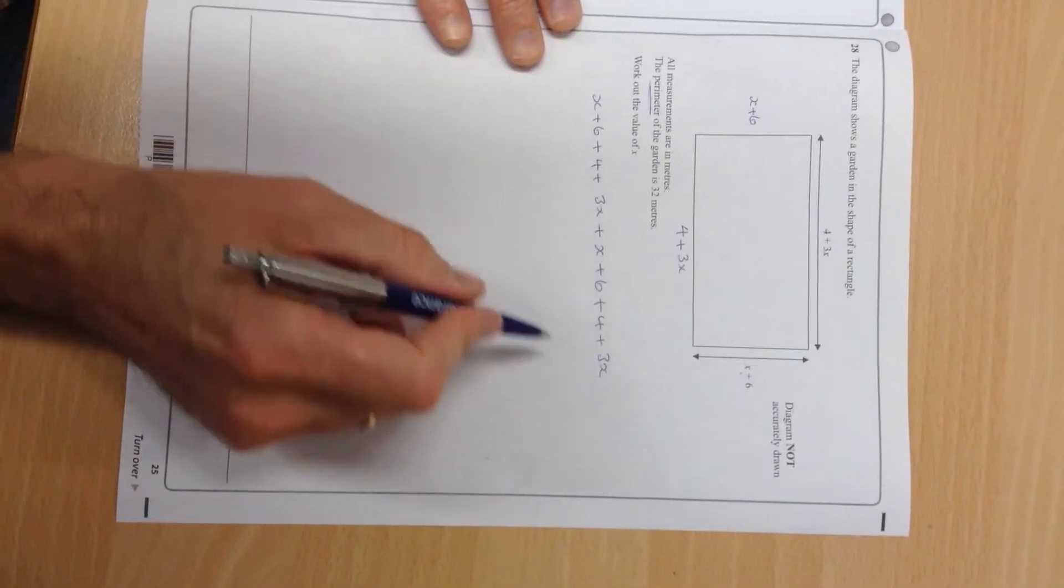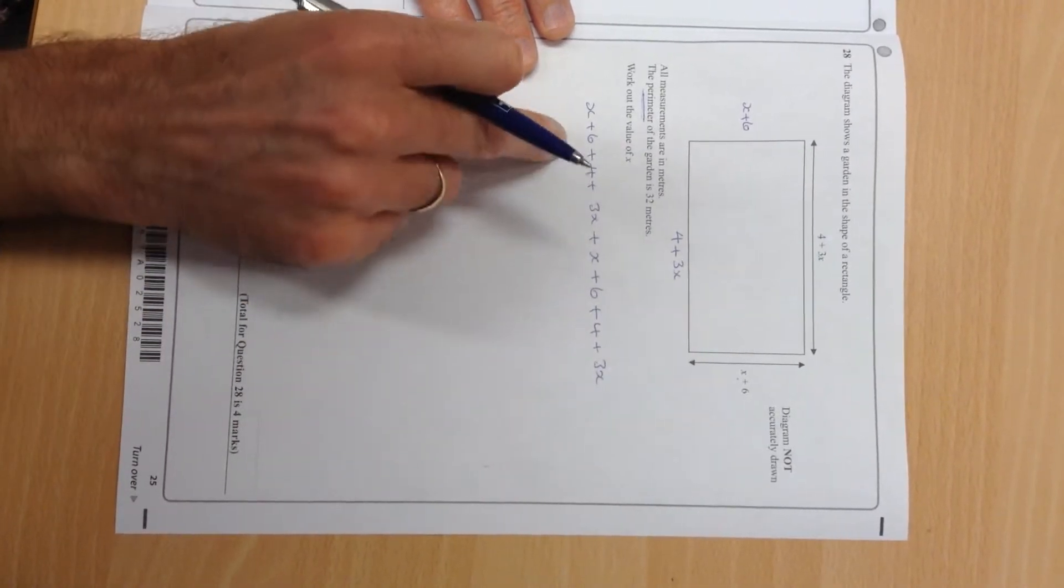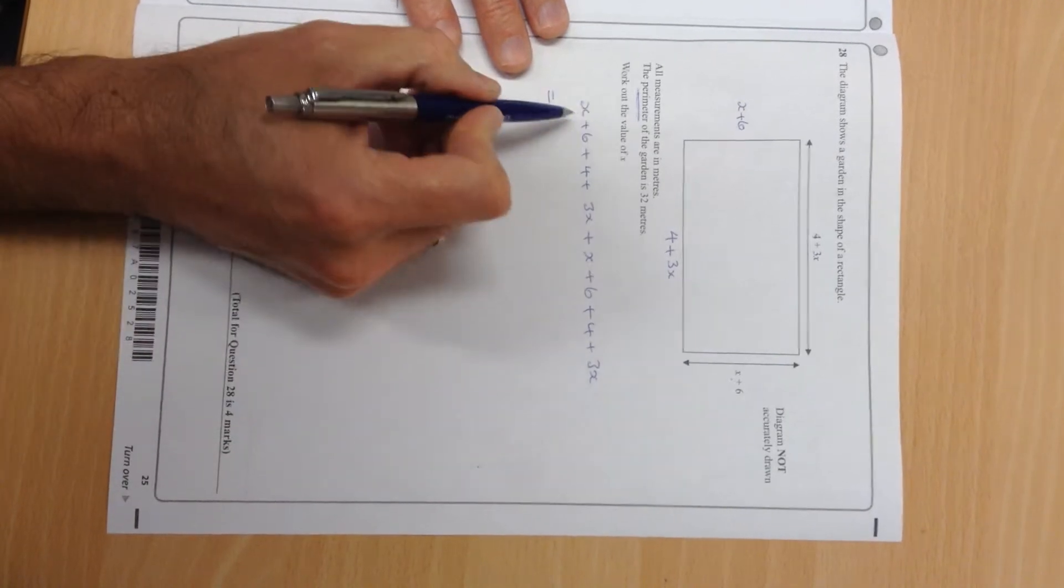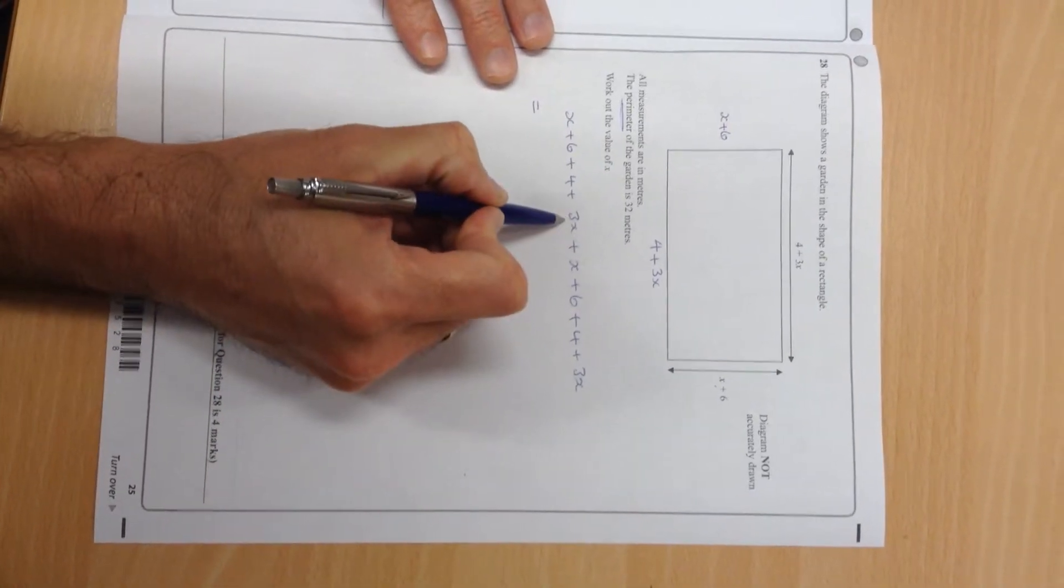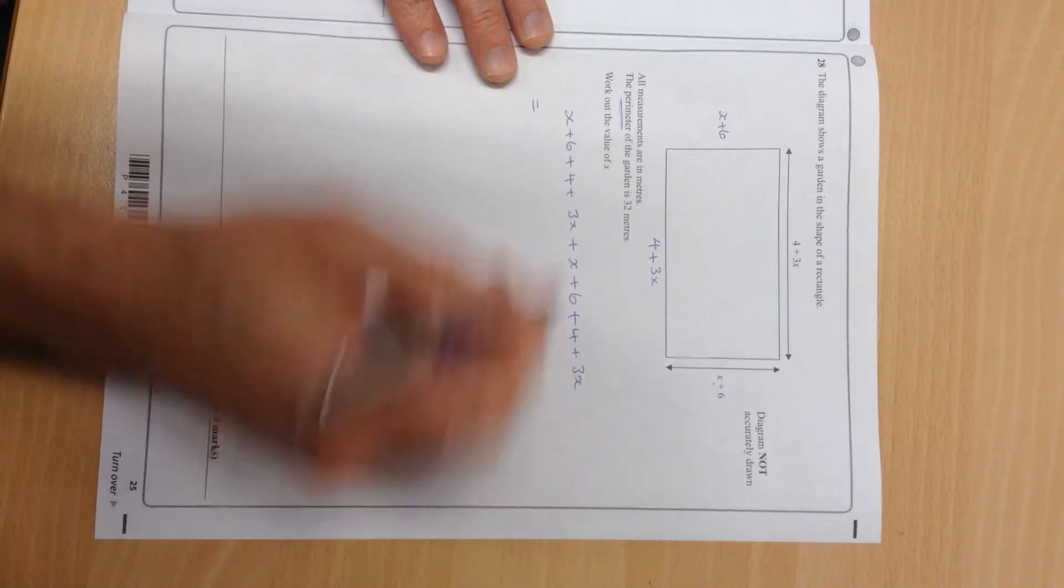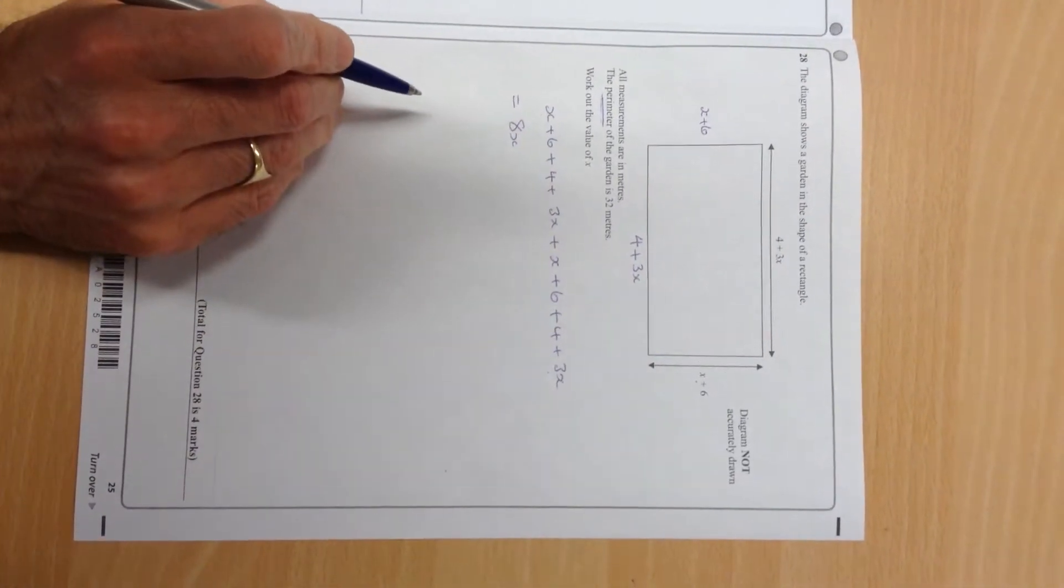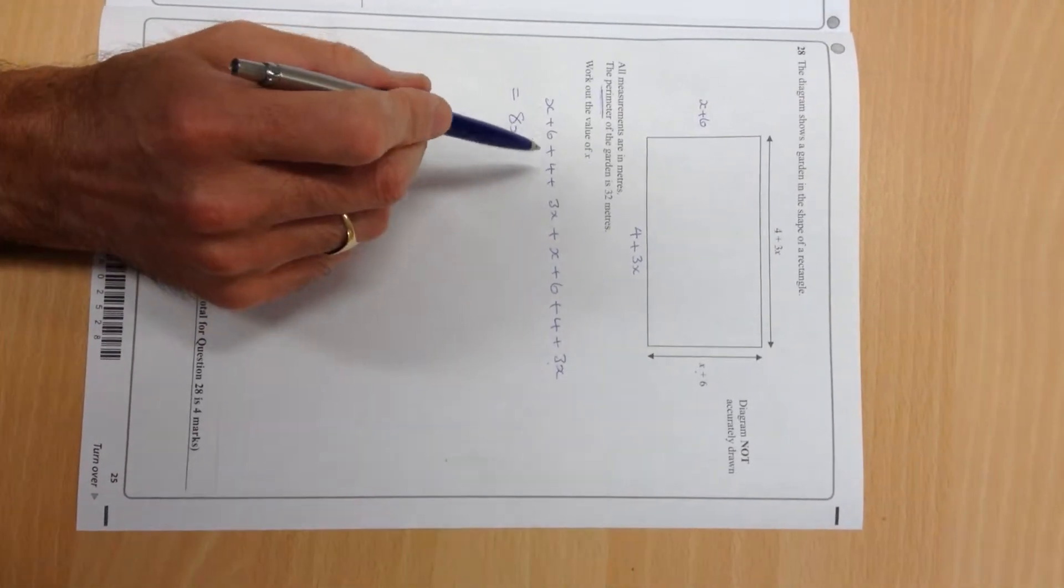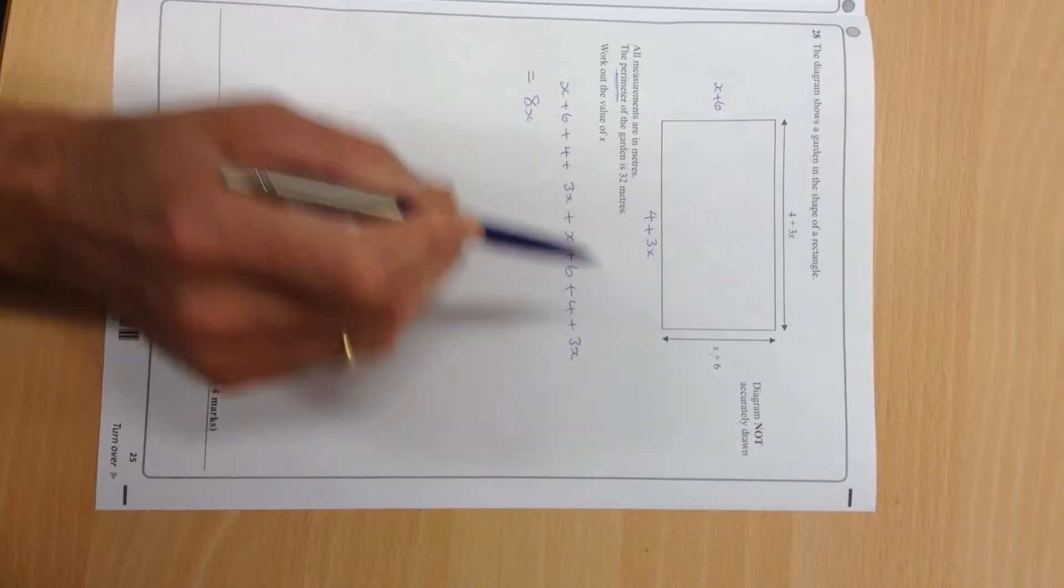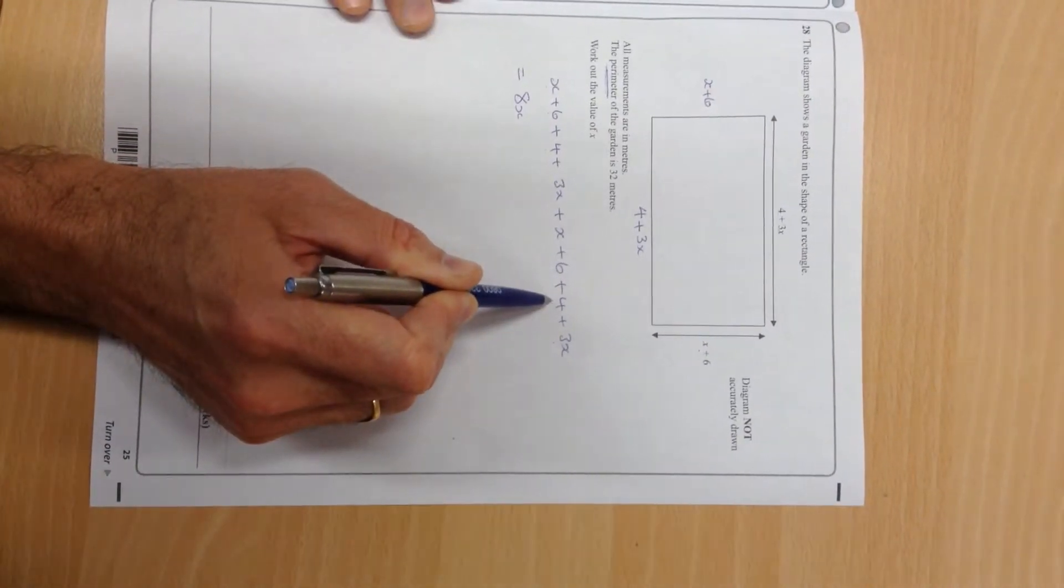Now I'm going to sort them out into two families: I've got an x family and a numerical family. I'm going to sort out the x's first. I've got 1x, 4x, 5x, 8x. And then the numerical family: 6 plus 4, which is obviously 10, 10 plus 6 plus 4 again is 20. 8x plus 20, okay, that is my perimeter so far.